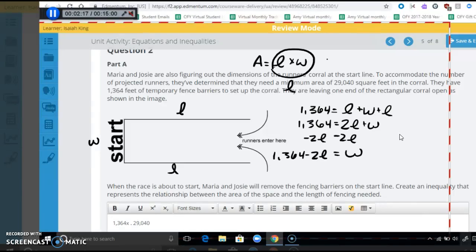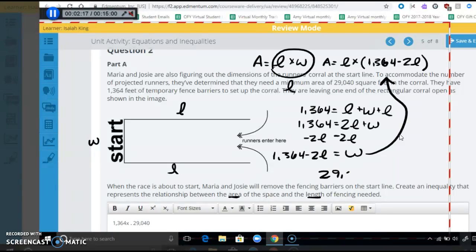Now what we can do, instead of having width here, we can represent this as area equals length times, let's put this in parentheses, 1,364 minus 2 length. Now we have represented, we have shown the relationship between the area and the length because that's all that's here now, area and length, no width anymore. So, but we need to create an inequality. It says here that they need a minimum of 29,040. And so, we're going to have 29,040, and we need an inequality here. And then we have length times 1,364 minus 2 length. And so that inequality is going to be less than or equal to.